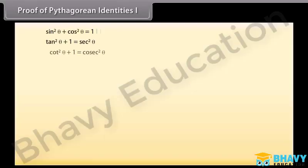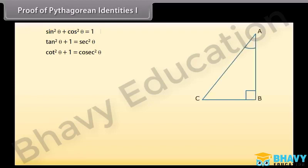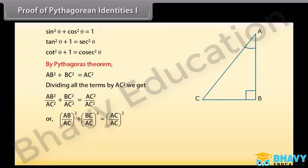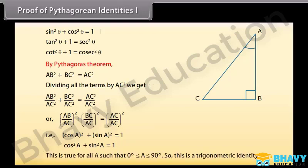Proof of Pythagorean identity 1. We will prove one Pythagorean identity and use it to prove the others. For that, we take a right-angle triangle ABC. By the Pythagorean theorem, AB squared plus BC squared is equal to AC squared. Dividing each term by AC squared, we can write it as (AB/AC)² + (BC/AC)² = (AC/AC)², that is cos squared A plus sin squared A is equal to 1. This is true for all A such that 0° ≤ A ≤ 90°, so this is a trigonometric identity.